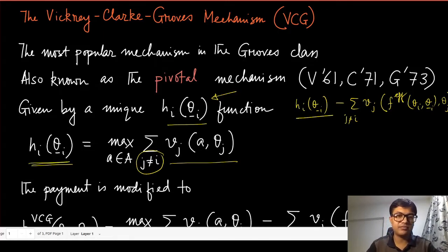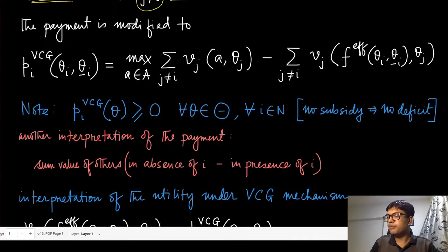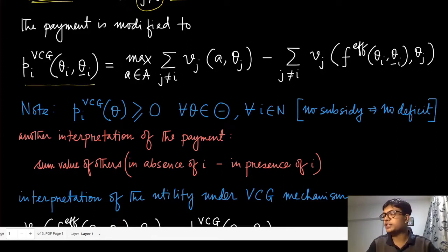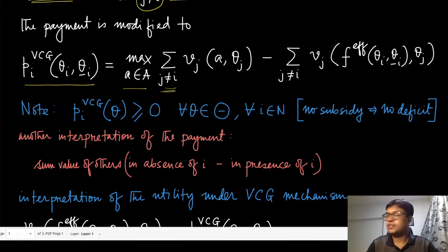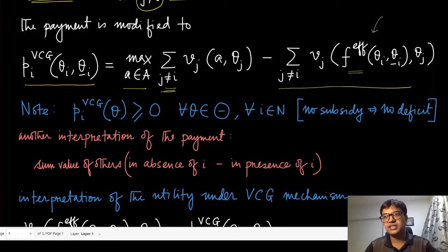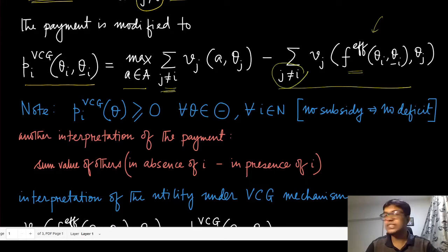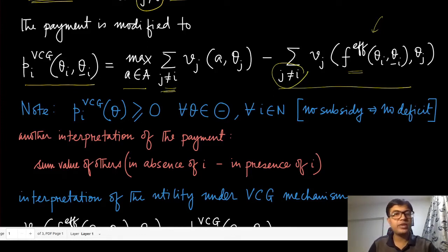The VCG payment π^VCG(θ_i, θ_{-i}) is given by: the maximization over alternatives of the sum of valuations excluding agent i, minus the sum of valuations of all agents except i at the efficient allocation (where agent i is present). This difference is essentially the VCG payment.